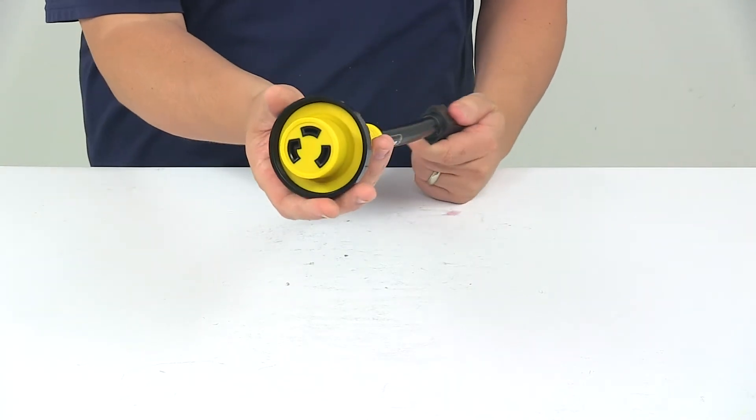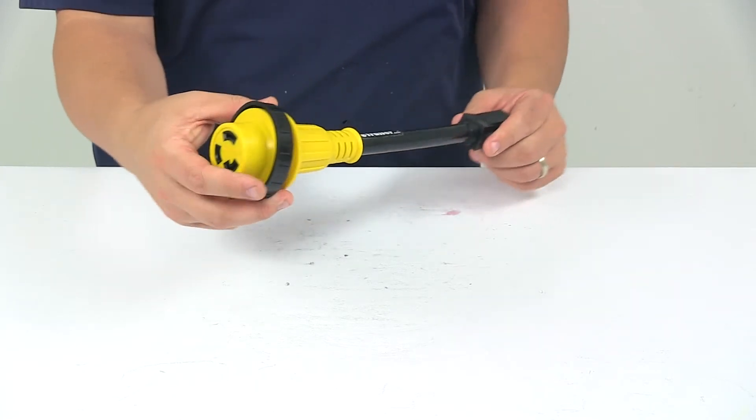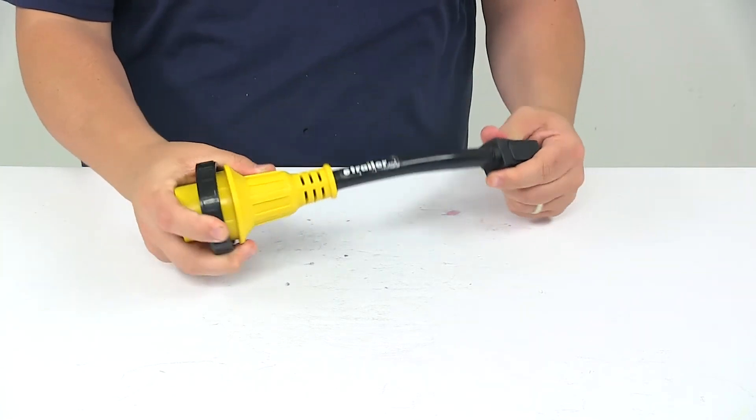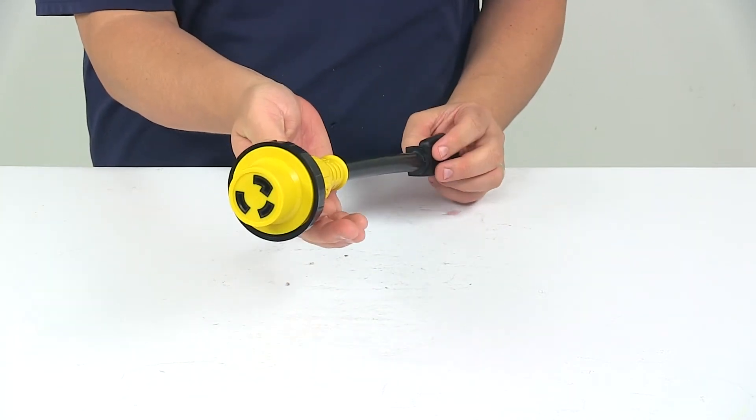The locking ring on the female end creates a weatherproof connection with a threaded ring on your RV's power inlet. We're looking at a nice heavy duty weather resistant construction with a bright yellow connector head for easy visibility.